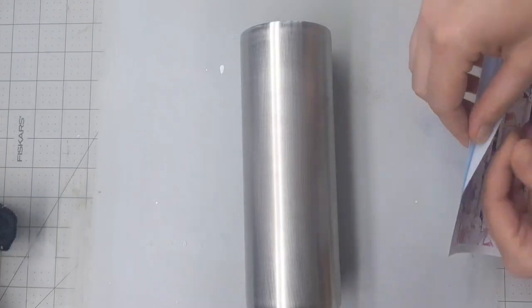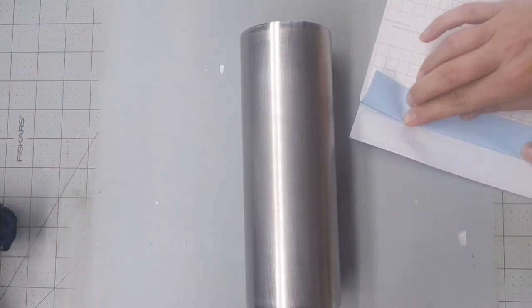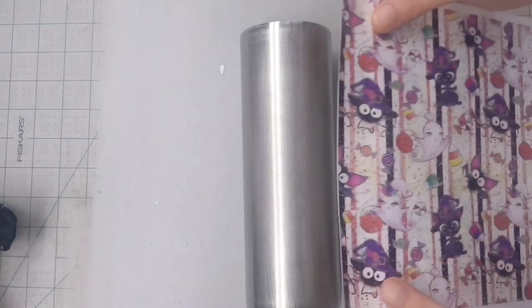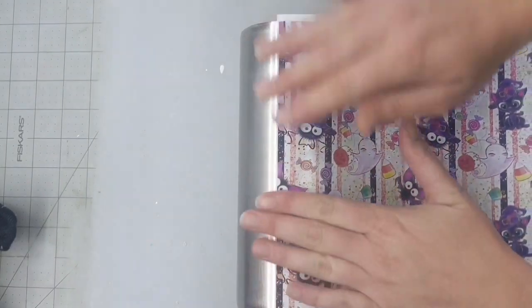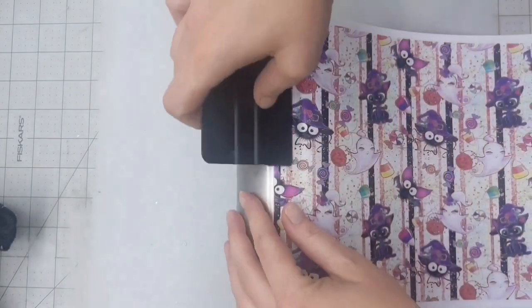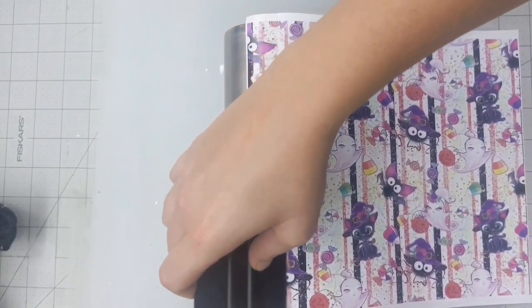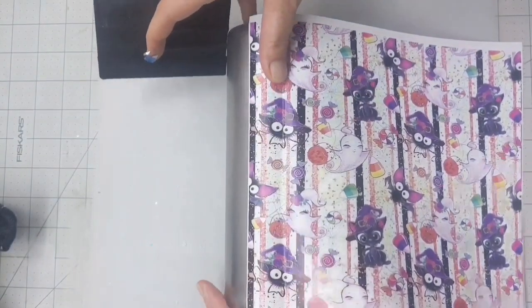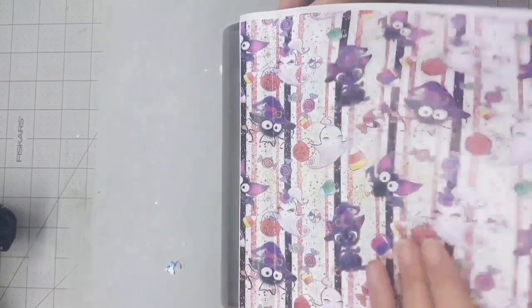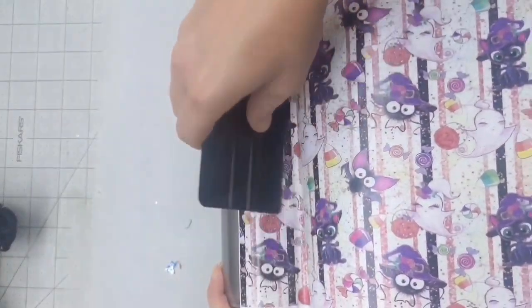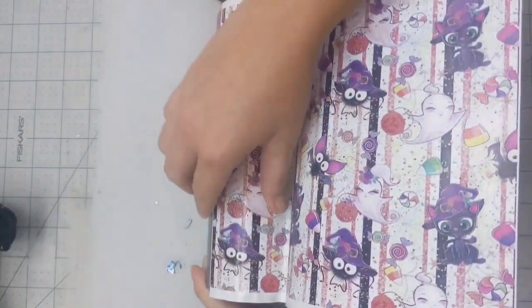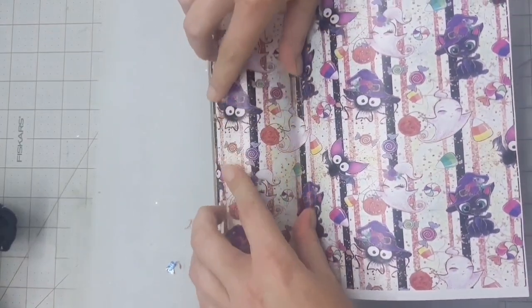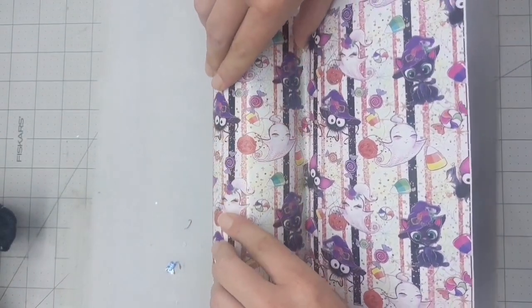To do that I remove about one inch of vinyl from the paper backing and then I'm just going to line it up on the cup. Make sure that top white strip lines up with the top of the cup so everything should be straight. I'm just using this vinyl scraper tool that I got off Amazon and my thumbs and just kind of rotating that cup. As I rotate the cup it kind of does the work for me.